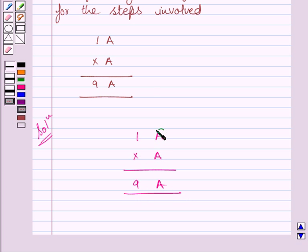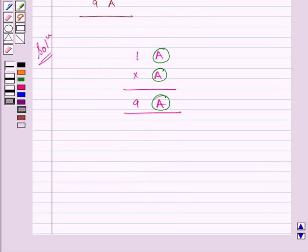Now, we need to find the value of letter A. Clearly, the unit's digit of A multiplied by A is A itself.